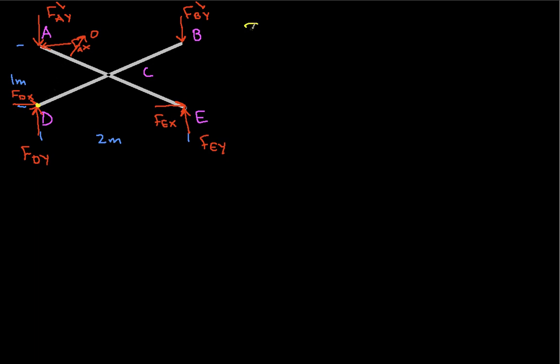So if we write out what the moment is, sum of the moments about D is equal to zero. We have FBY. This will be a negative FBY because it's inducing a clockwise rotation. It's working through a moment arm of 2 meters from here to here. And so, this will be times 2 meters. And then, FEY is positive. It will give us a positive moment because it's working in a counter-clockwise direction. It's also working through a moment arm of 2 meters. And so, what this tells us then is that FEY is going to be equal to FBY. So, we can say then that FEY is 3528 Newtons.